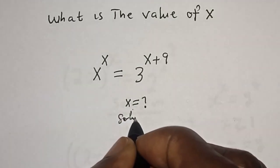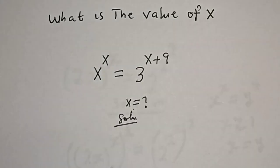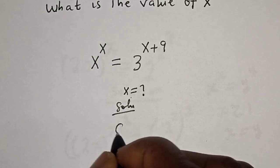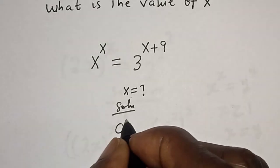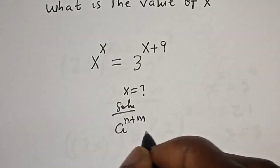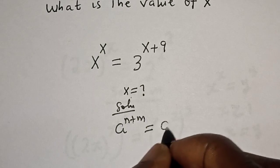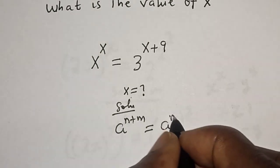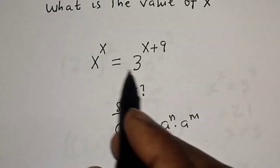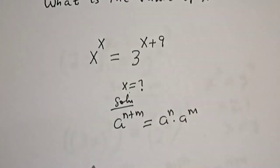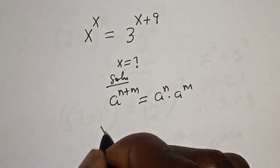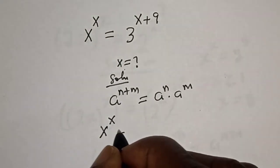Take note of this exponential rule: a to the power of n plus m is equal to a to the power of n multiplied by a to the power of m. Then s to the power of s...